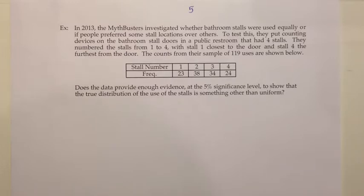In 2013, the MythBusters investigated whether bathroom stalls were used equally or if people preferred some stall locations over others. To test this, they put counting devices on the bathroom stall doors in a public restroom that had four stalls. They numbered the stalls from one to four, with stall one closest to the door and stall four furthest from the door. The accounts from their sample of 119 uses are shown below.